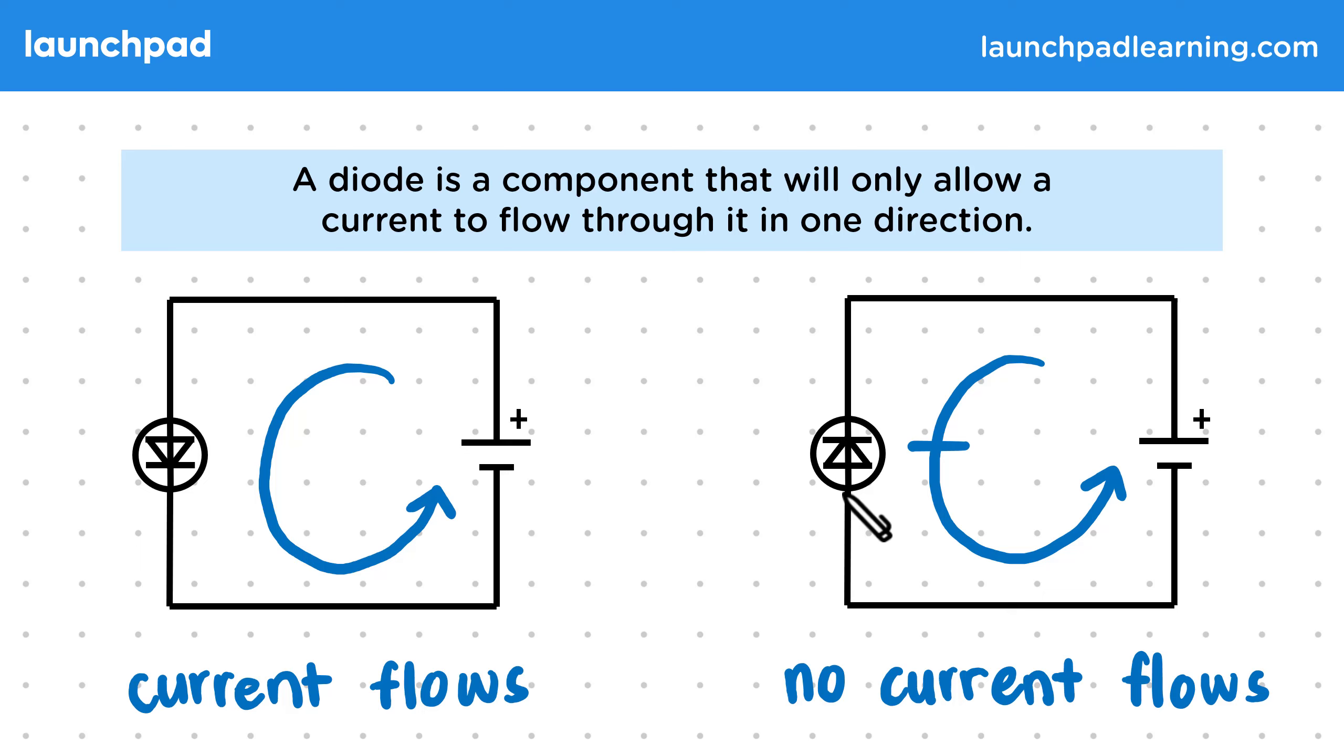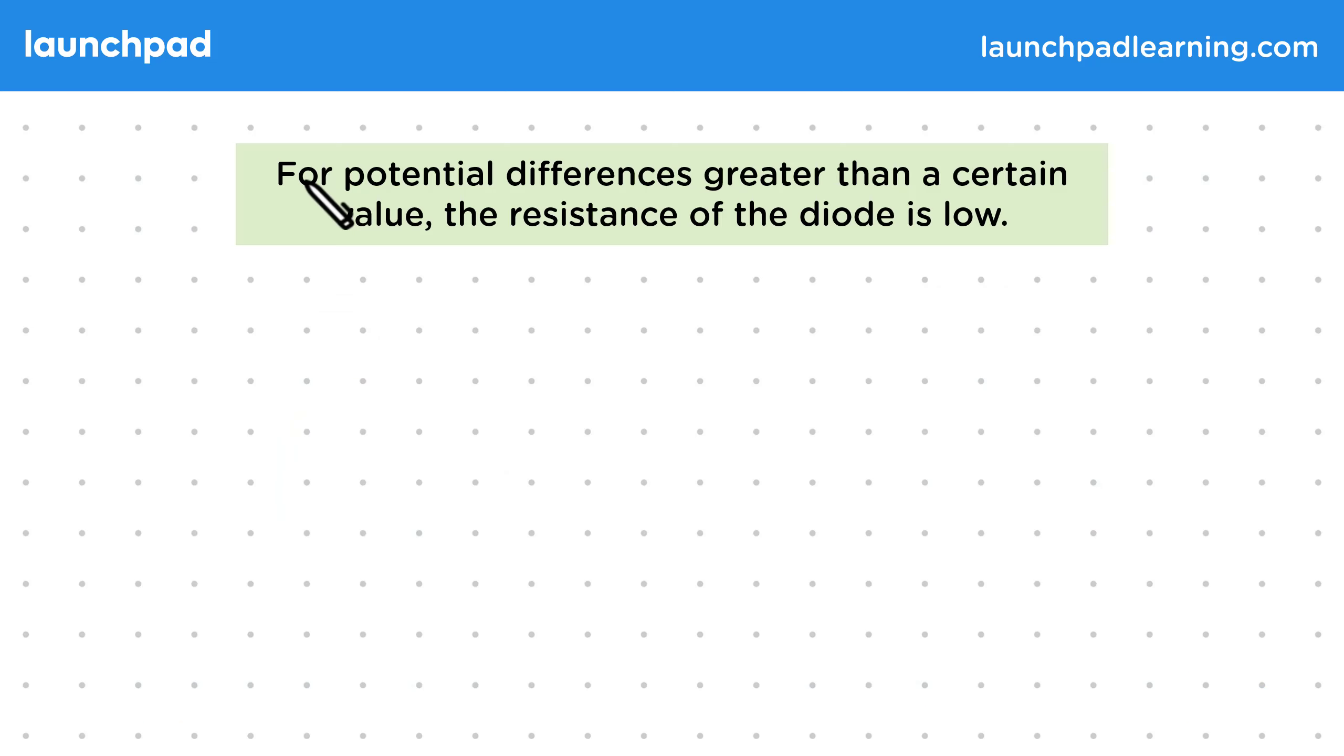Well it's to do with its resistance, which we can understand by looking at its IV graph. For potential differences greater than a certain value, the resistance of the diode is low. This potential difference value is also known as the threshold potential difference.